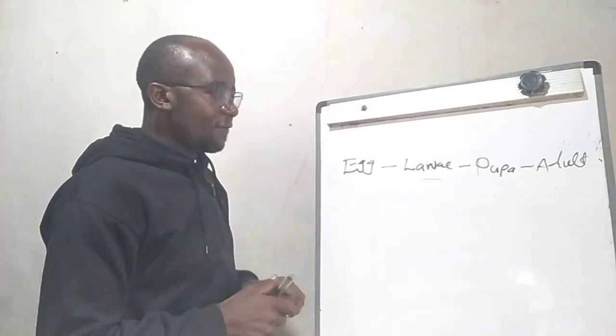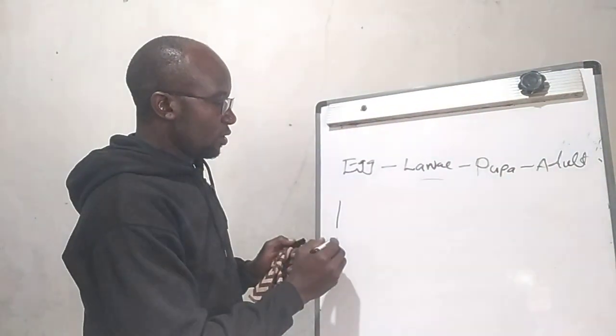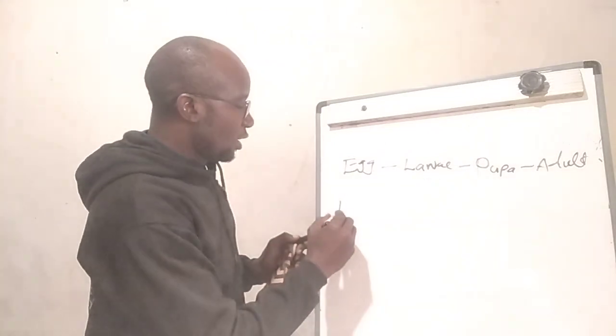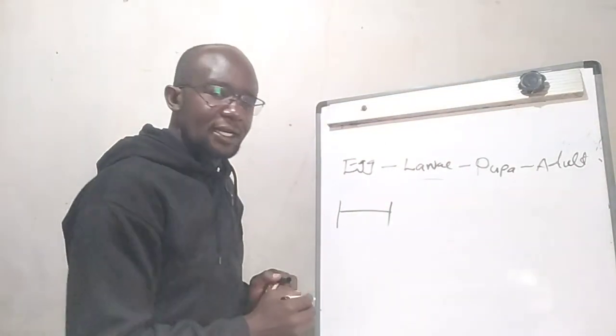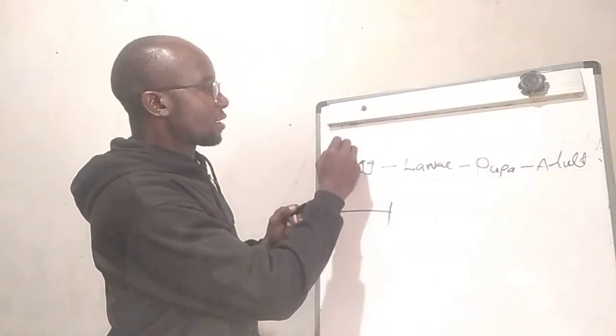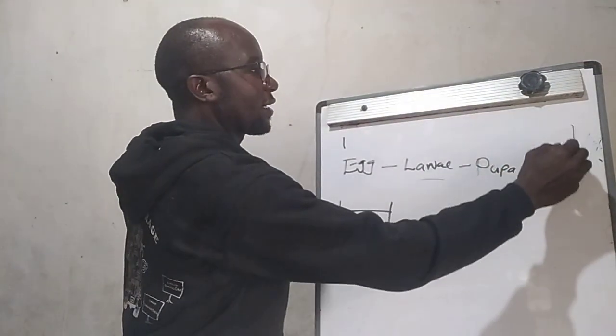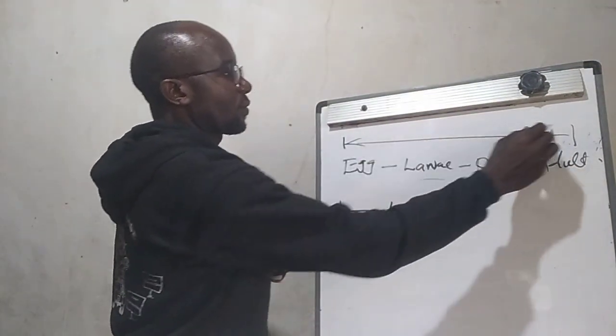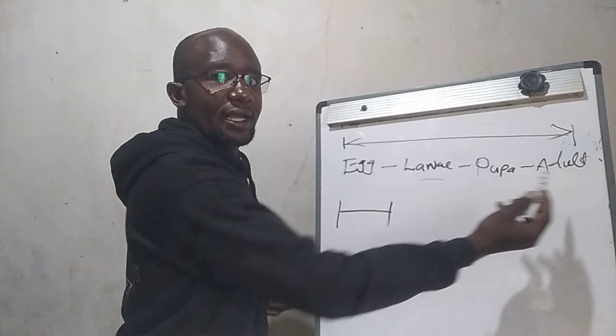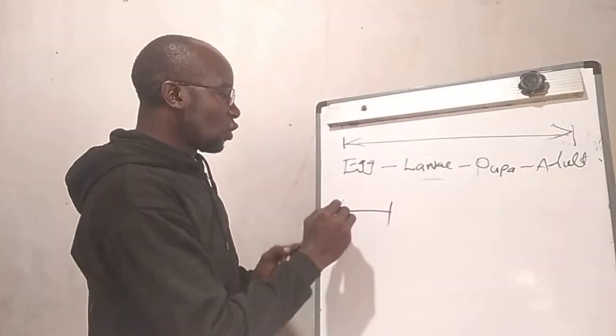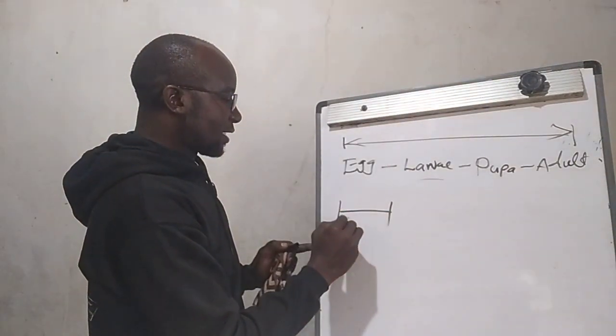What do I mean by a generation? We have the Tuta here. We have already started spraying, and then 30 days, that's one generation. One generation is taken from egg to adult. So this is one generation. From egg to adult, we have one generation. So here is 30 days.